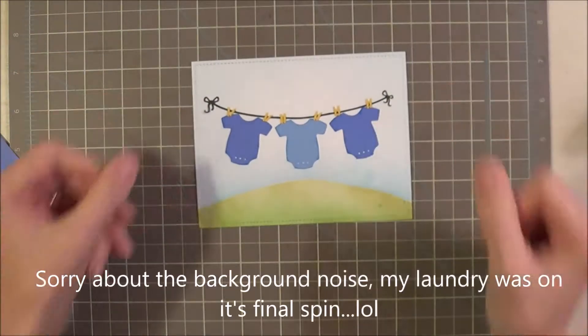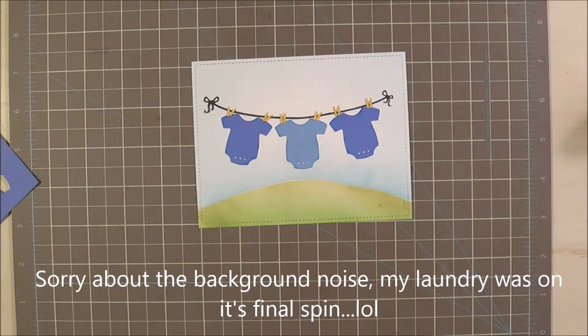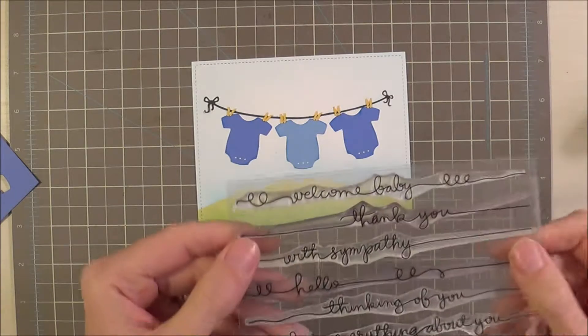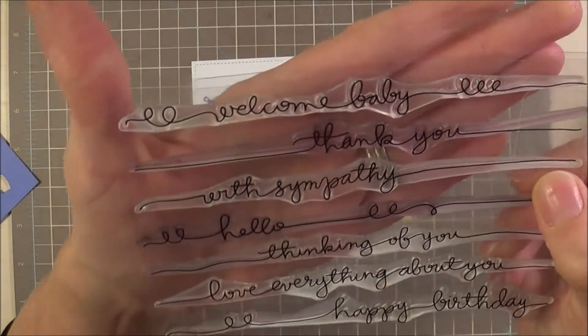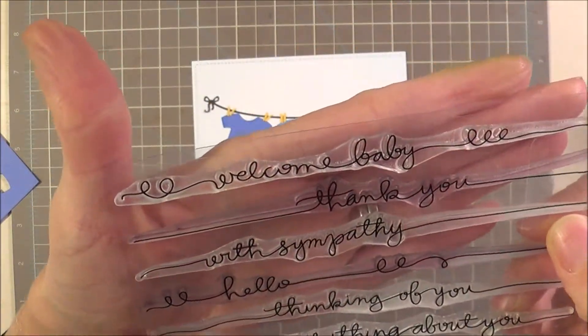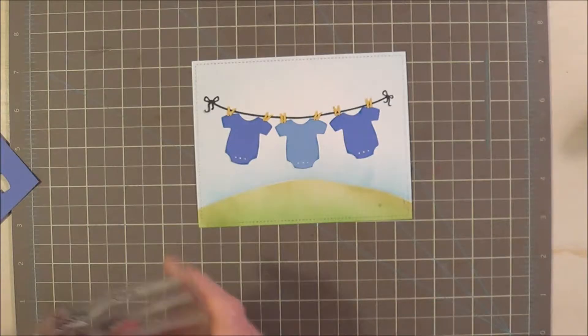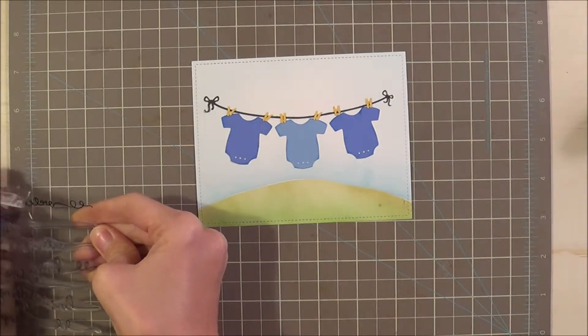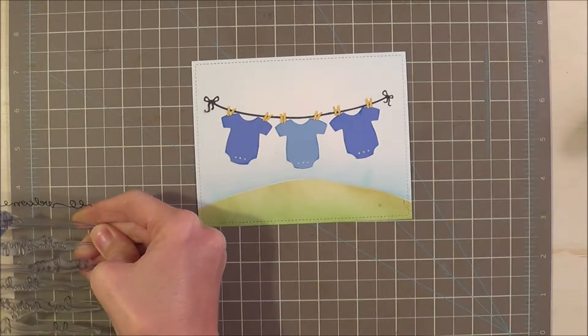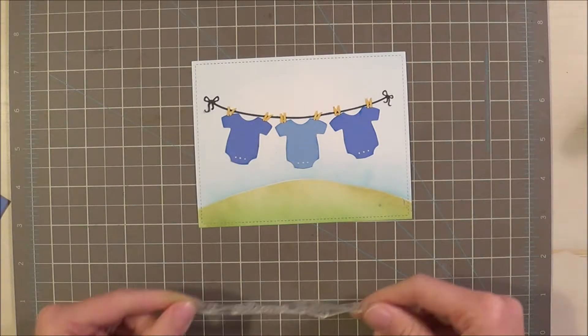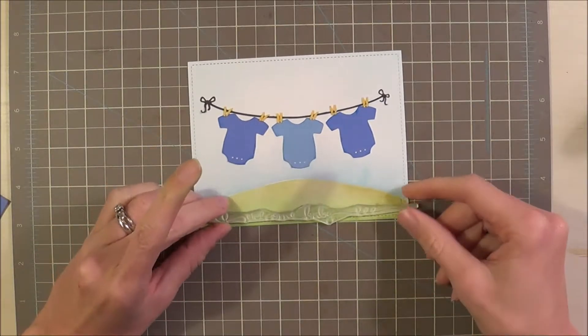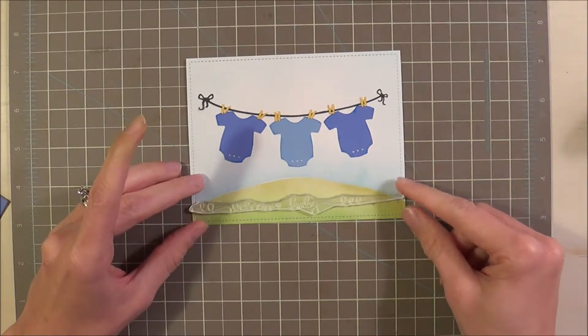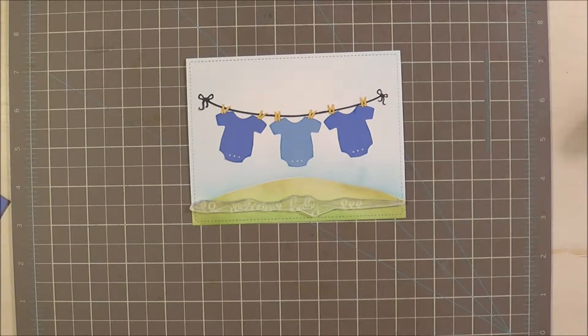I'm just going to add a sentiment and then add it to the front of the card. I thought this stamp set from Simon Says Stamp, it is the Handwritten Borders Welcome Baby would be perfect for this card. And I haven't used it yet. This is the first Welcome Baby card I have made in quite some time. So I'm really happy to pull some of these things out. So I think I'm going to have it just like that across the bottom.